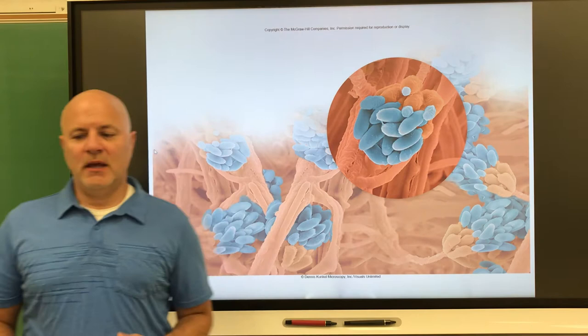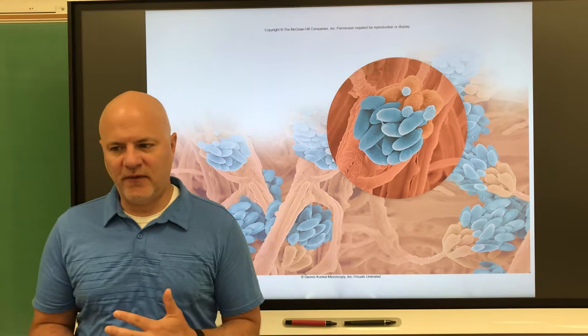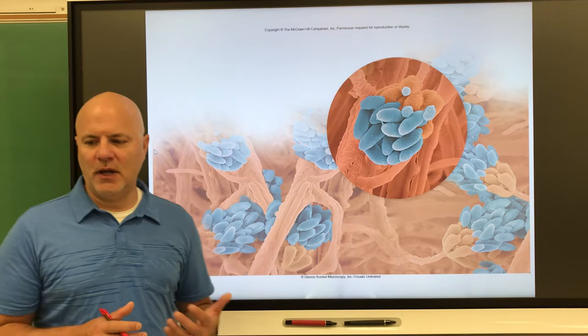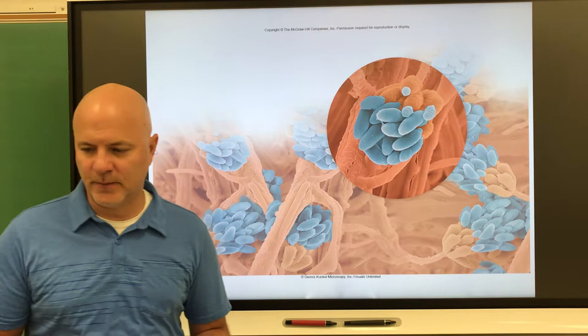Let's take a look at fungi. We essentially have two groups of fungi. One is macroscopic fungi — those are things you can see, like mushrooms, puffballs, and gill fungi. The other is microscopic fungi, such as molds and yeast. Most are unicellular or colonial, though a few of these microscopic ones are multicellular.